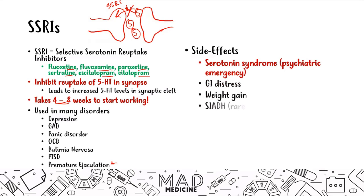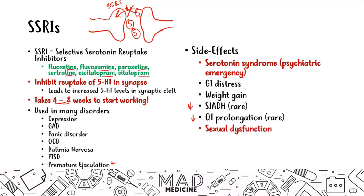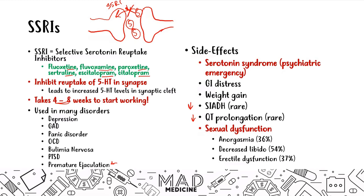SIADH — syndrome of inappropriate ADH — is rare but can occur, as well as QT prolongation, which is also very rare. The last high-yield side effect is sexual dysfunction. A lot of people who take SSRIs deal with anorgasmia (36% of patients), decreased libido (54% of patients), and erectile dysfunction (37% of patients). This is why SSRIs can actually be used for premature ejaculation — the sexual dysfunction side effect can reduce the threshold, making it take longer, which in this case is a preferential side effect.